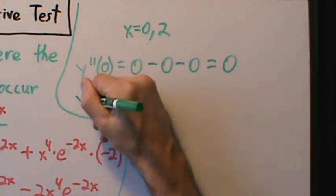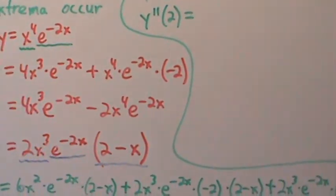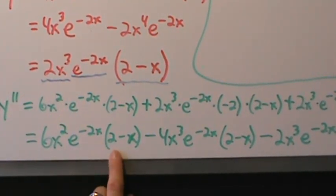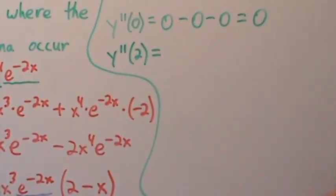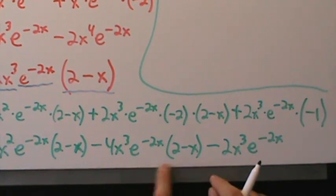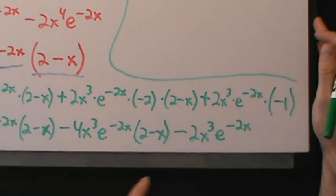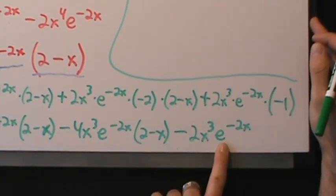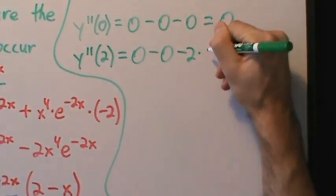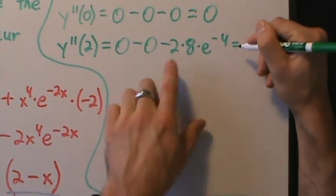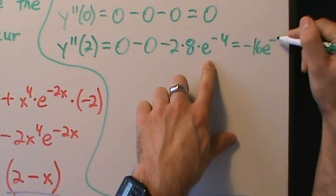Evaluating y double prime at x equals 2: the first term contains (2 minus 2), which is 0, so that term is 0. The second term also contains (2 minus 2), so it's also 0. The third term is minus 2 times 2 cubed times e to the negative 4, which is minus 2 times 8 times e to the negative 4, giving negative 16 e to the negative 4.